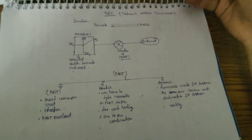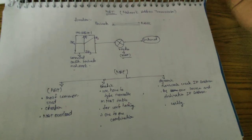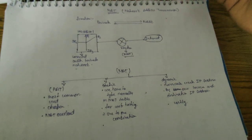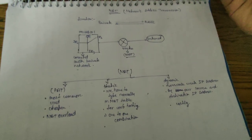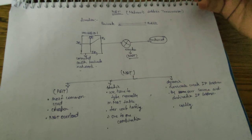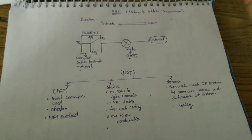So here is NAT. NAT is Network Address Translation. It is mainly used to convert addresses between private and public. Either we can convert private to public or public to private.